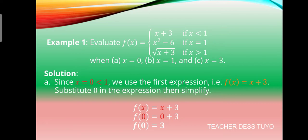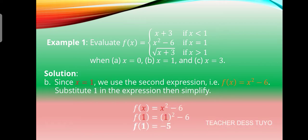Remember, substitution and evaluating are just the same — you need to substitute or change the value of the variable to the given value. Next, since x = 1, we use the second expression f(x) = x squared minus 6. Substituting 1 and simplifying: f(1) = 1 squared minus 6 = 1 minus 6, so f(1) equals negative 5.